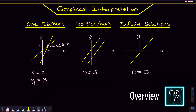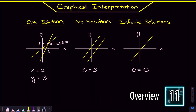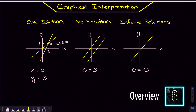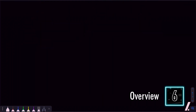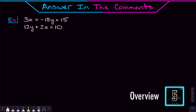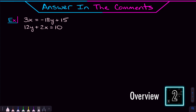After we go through all that and solve those, I'm going to talk about what one, zero, and infinite solutions actually mean graphically. We'll go through that, and then I'll give you a problem to try and answer in the comments. By that point, this should honestly be breezy.